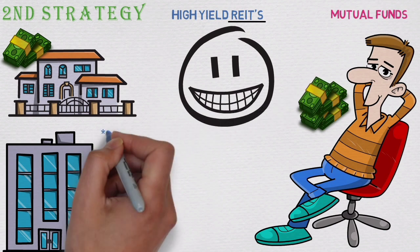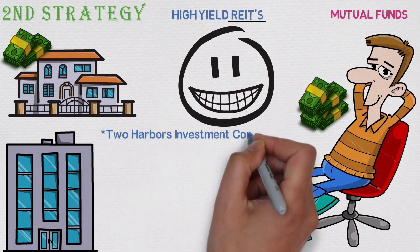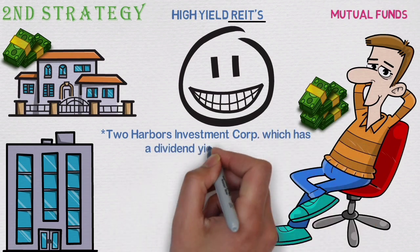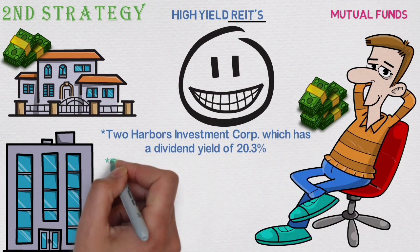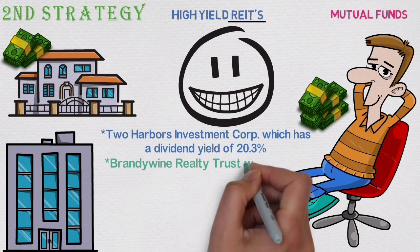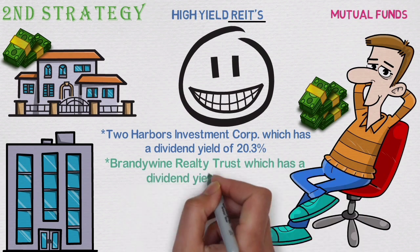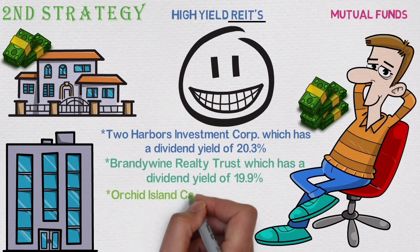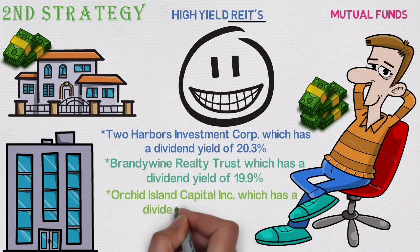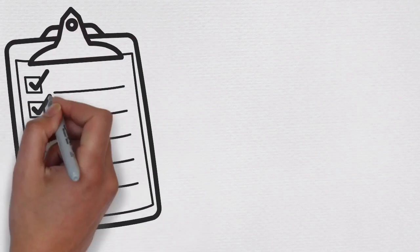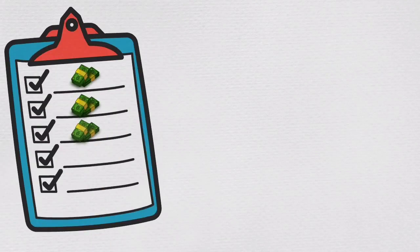Here are a few great REITs to consider. Two Harbors Investment Corp., which has a dividend yield of 20.3%. Brandywine Realty Trust, which has a dividend yield of 19.9%. Orchid Island Capital Inc., which has a dividend yield of 19.4%. These REITs have years of track record for being consistent while paying out dividends.